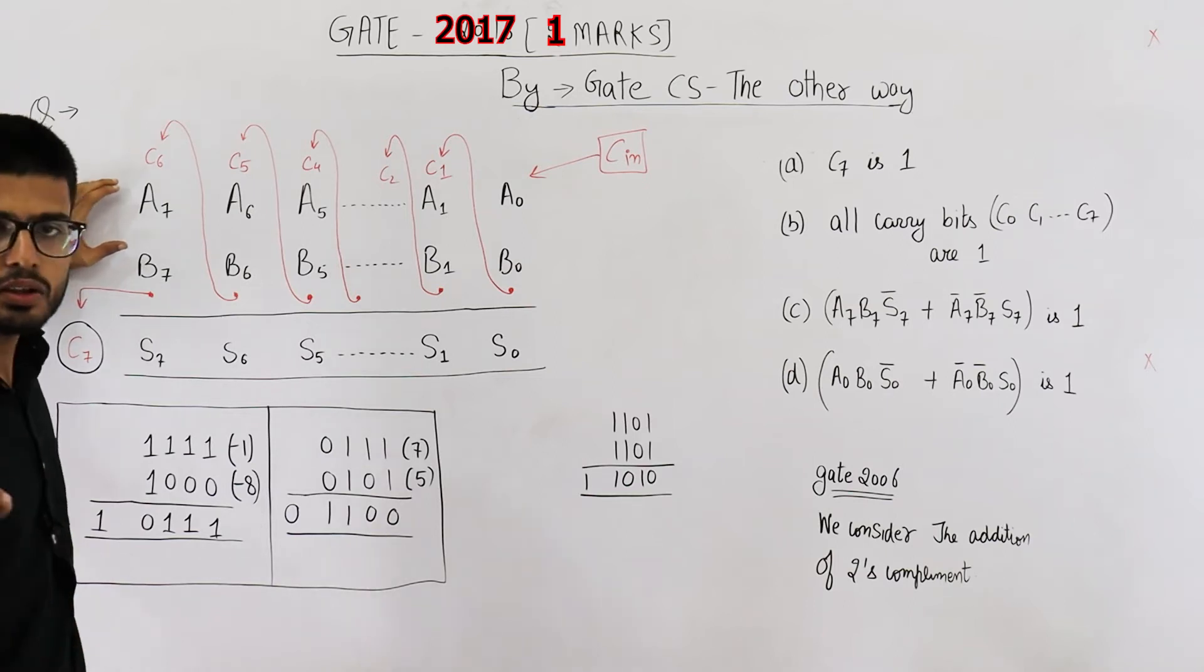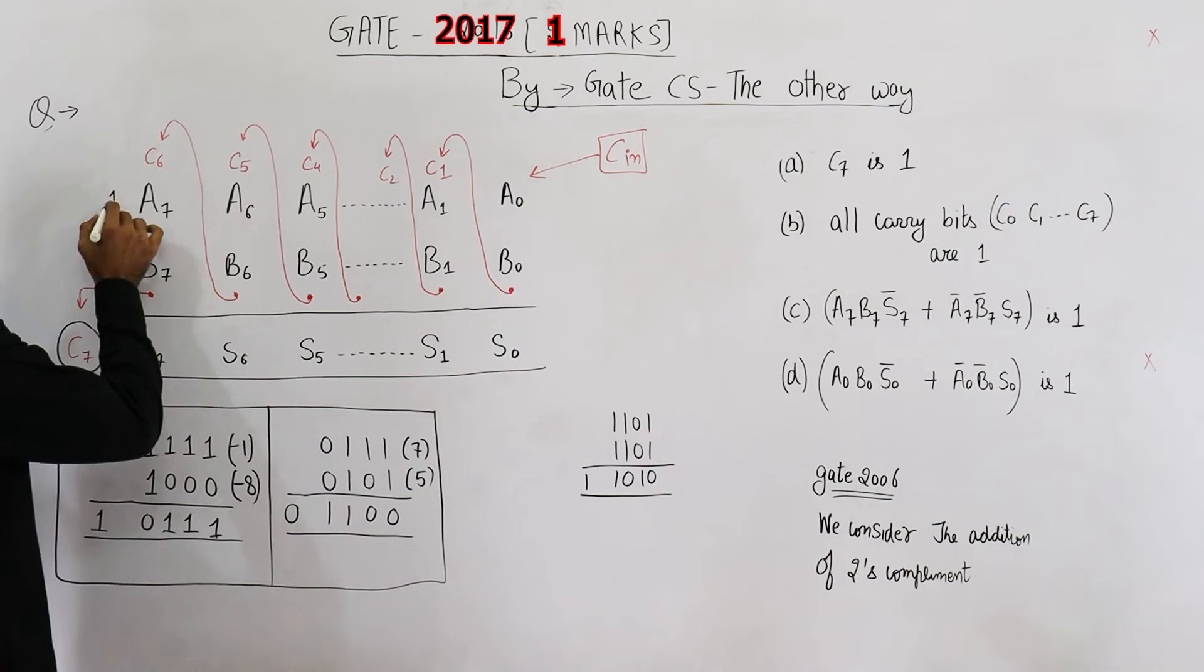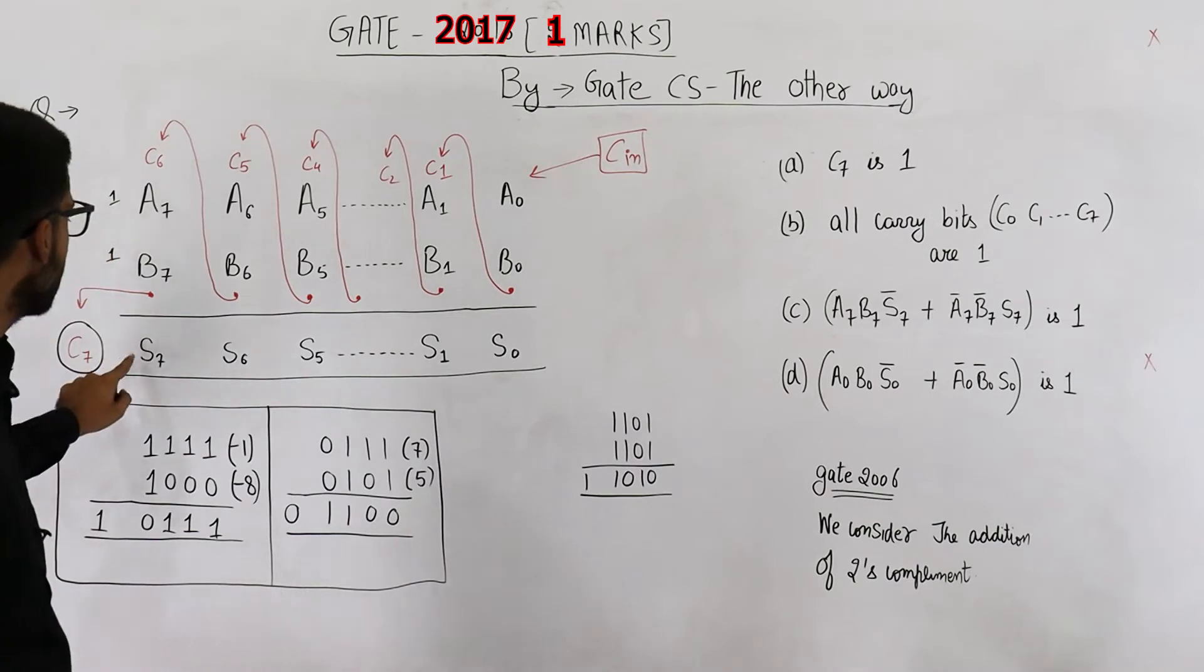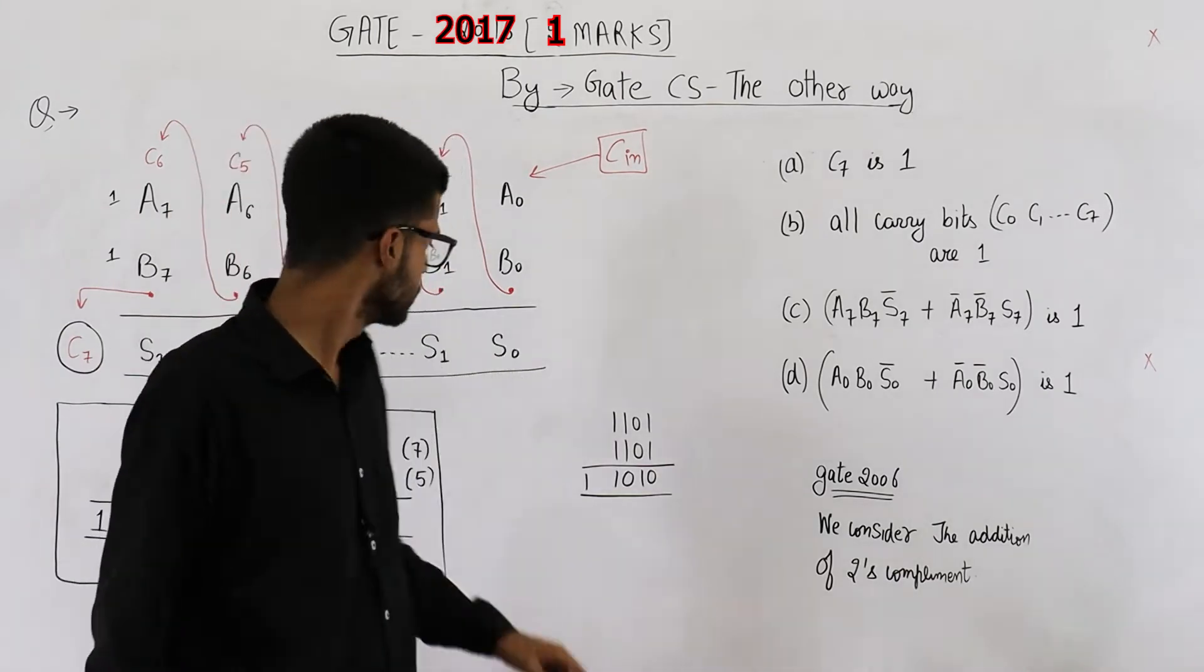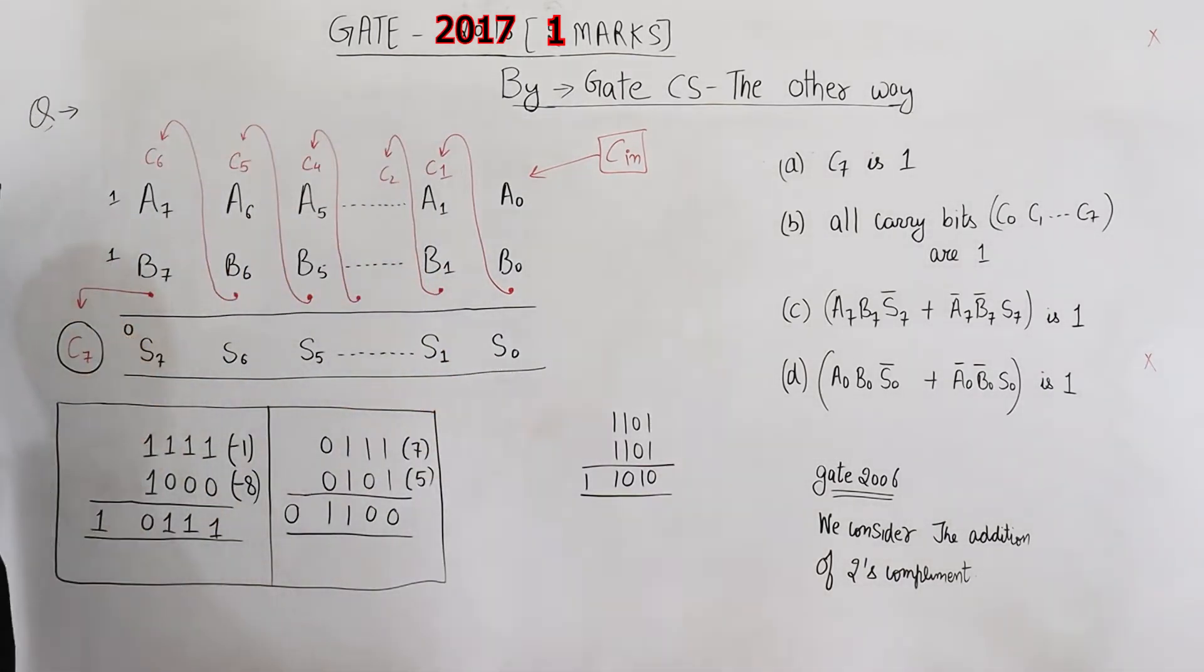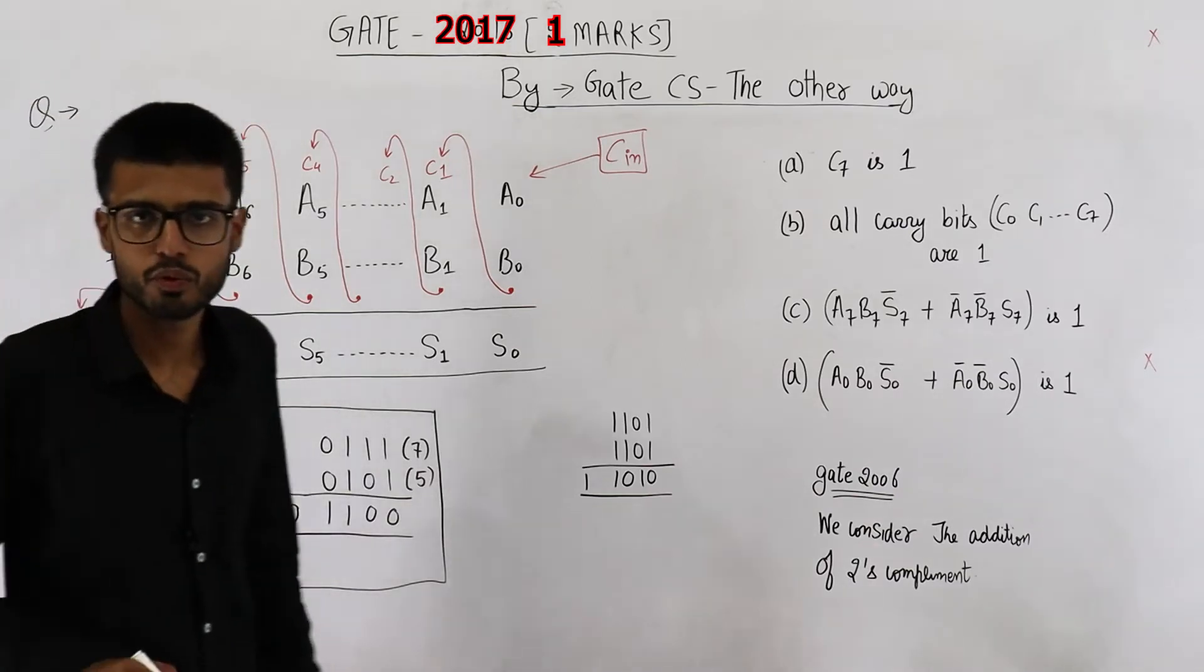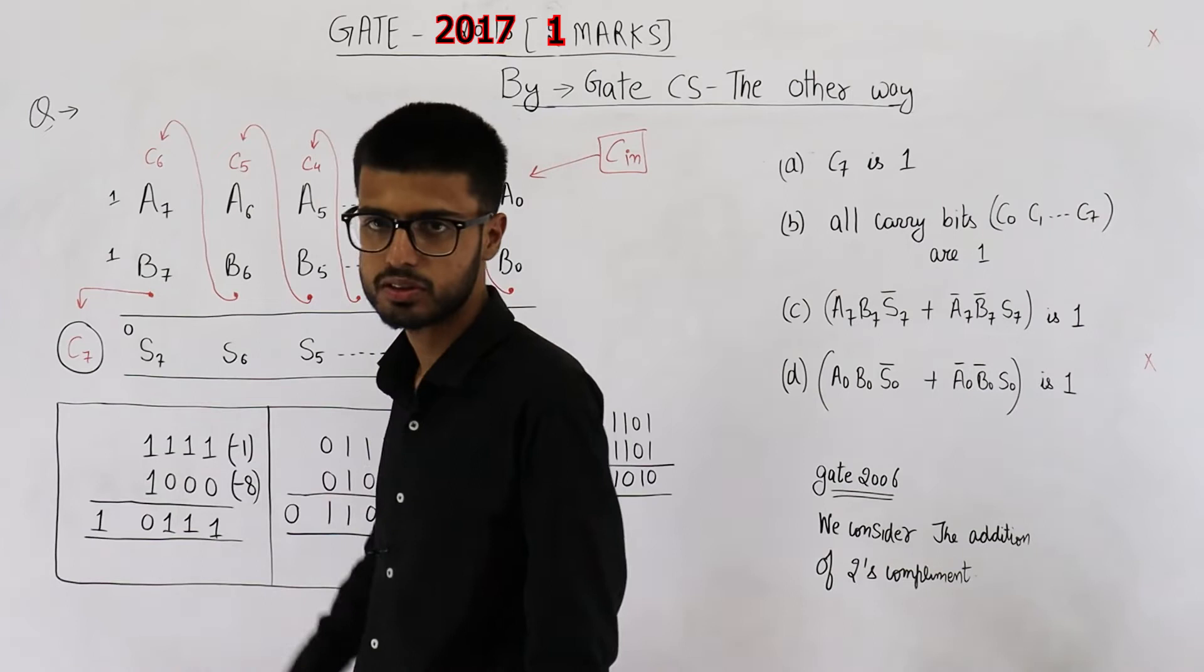So whenever the most significant bit of a number is 1, that number is negative. That means if A7 is 1, B7 is 1, both of these numbers will be negative. And if S7, that means the most significant bit of the sum is 0, this number will be positive. So if this case occurs, that means A7 is 1, B7 is 1, S7 is 0, you will say there is an overflow because you are adding two negative numbers and the result is a positive number.